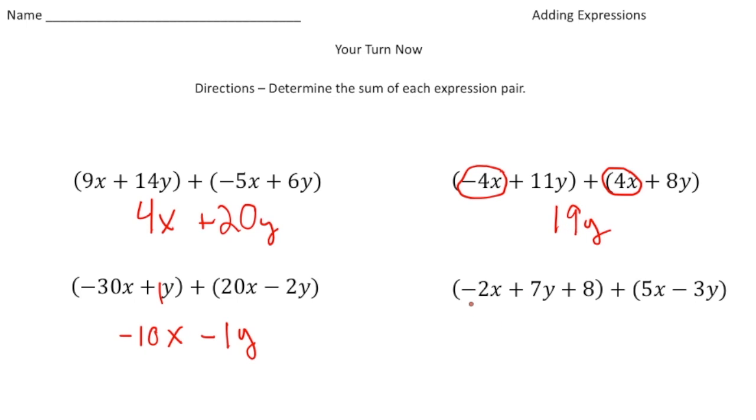Finally, we have a negative 2x and a 5x. So that's going to add up to 3x. This 7y and then negative 3y, that'll add up to 4y. And then finally, we just have this constant of a positive 8. And there's no other constants to add to it, so we're going to just write plus 8. And there it is.